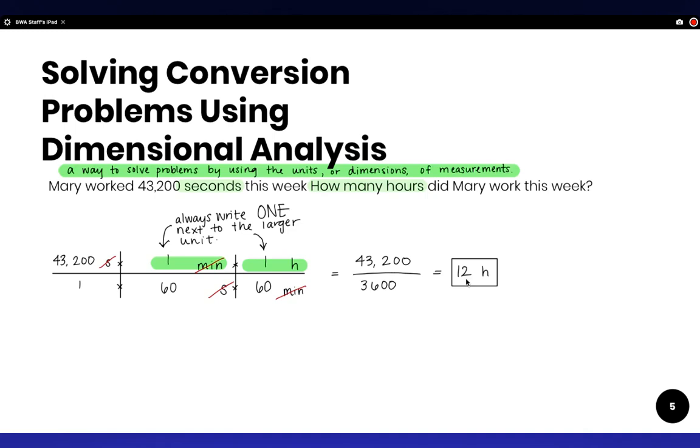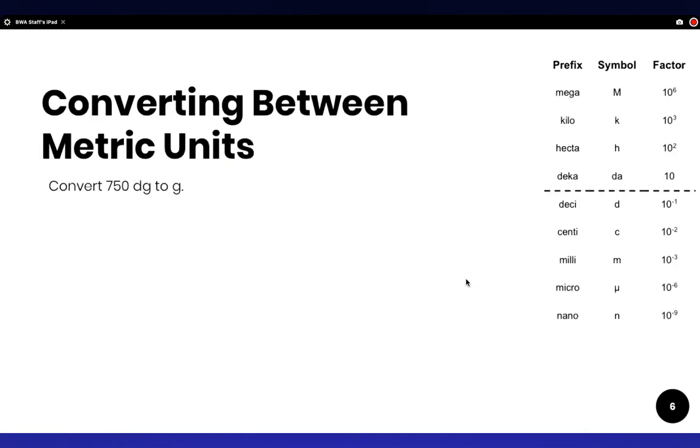Let's go ahead and do a couple practice problems together. Okay, so here we go. Convert 750 desigrams to grams.